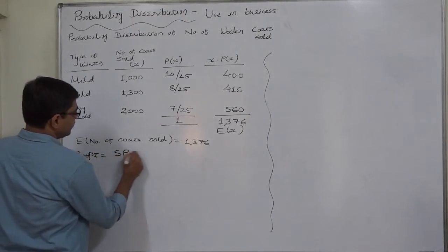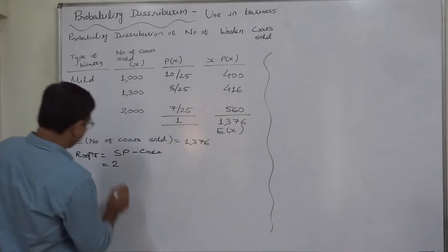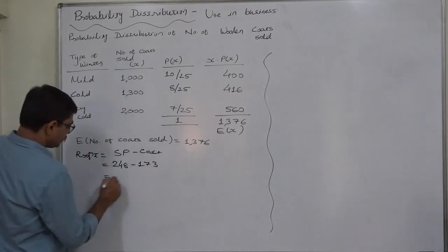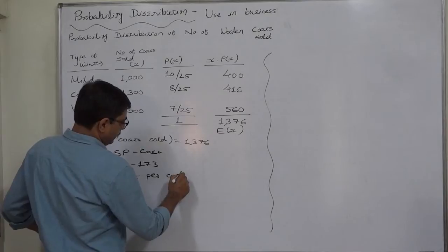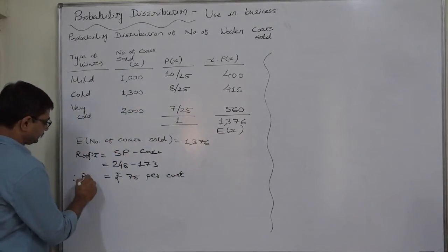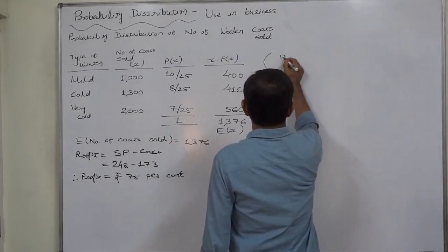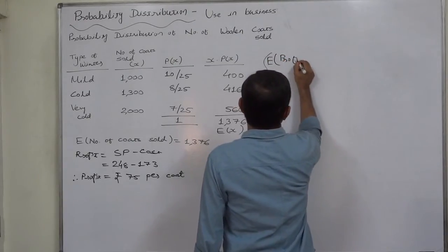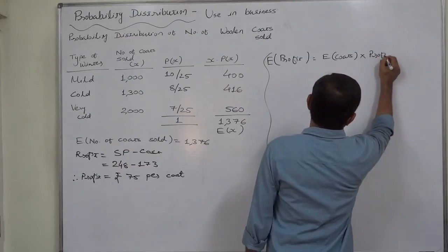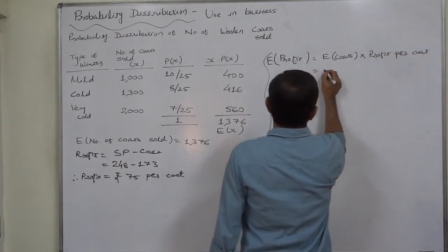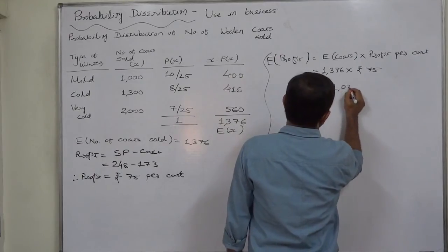The profit per coat is calculated as the selling price minus the cost price: rupees 248 minus rupees 173, which gives rupees 75 per coat. The expected profit is then the expected number of coats multiplied by the profit per coat, that is 1376 into rupees 75, which comes to rupees 1,03,200.